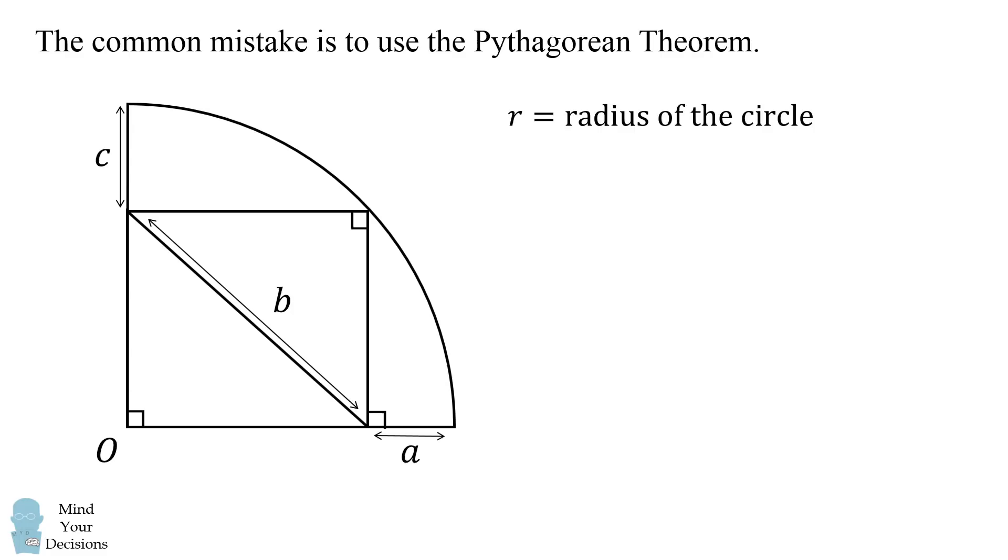Let r equal the radius of the circle. We can then write that r minus a is one length of this rectangle, and r minus c is the other side of this rectangle. We then have a right triangle with sides r minus a, r minus c, and a hypotenuse b. By the Pythagorean theorem, the quantity r minus a squared plus the quantity r minus c squared is equal to b squared.